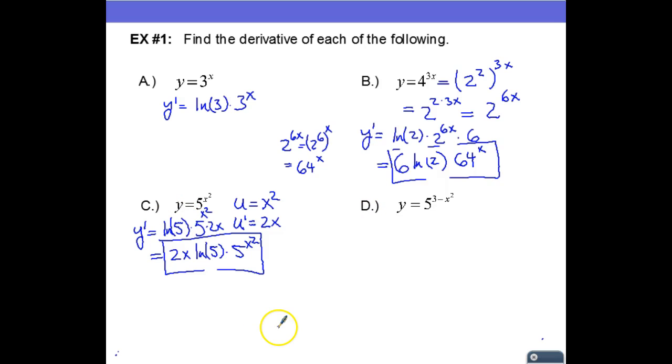Part D is going to work just like part C. We have a function that is the base five raised to u, where u is just some function of x. In this case, 3 minus x squared.